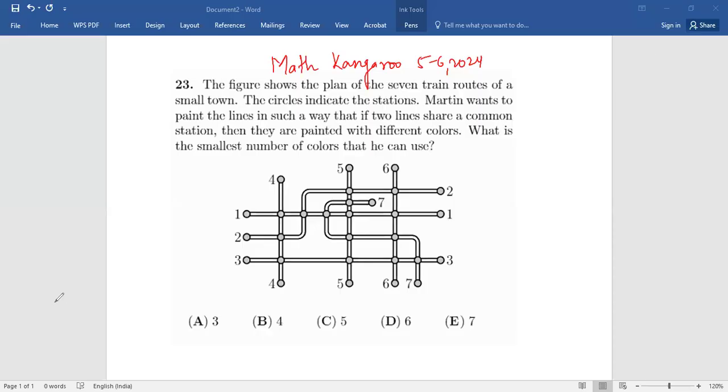Hello friends, today we will be doing Math Kangaroo level 5 and 6, year 2024, question number 23. This is a 5-point question. Let's read the question. The figure shows the path of the seven train routes of a small town. The circles indicate the stations. Martin wants to paint the circles in such a way that if two lines share a common station, then they are painted with different colors. What is the smallest number of colors that he can use?